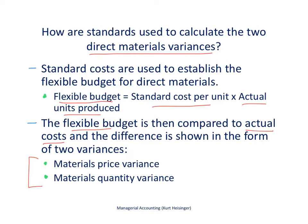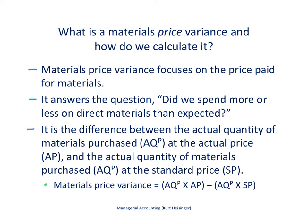In the materials setting, these two variances are the materials price variance and the materials quantity variance. Let's start with the materials price variance. The materials price variance focuses on the price that we paid for materials, and it answers the key question: did we spend more or less on the direct materials than we expected to spend?